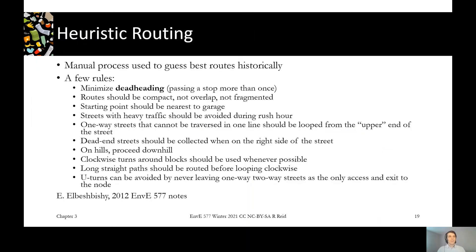Traditionally, waste routes have been planned heuristically, which means applying some rules of thumb and figuring out the best way just from experience and judgment. There are a few principles you might follow, shown on the screen, to try and develop the best heuristic route. But you're always going to be less efficient than an automated computer system.